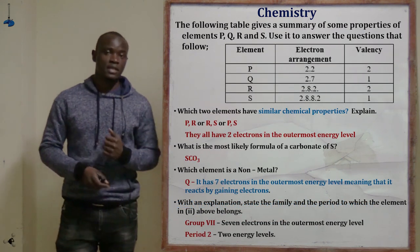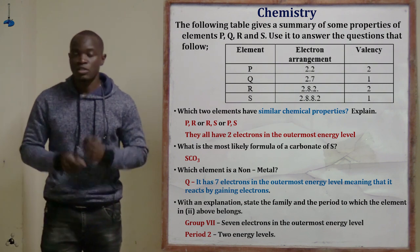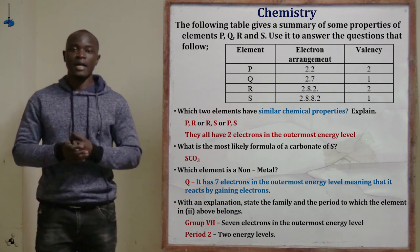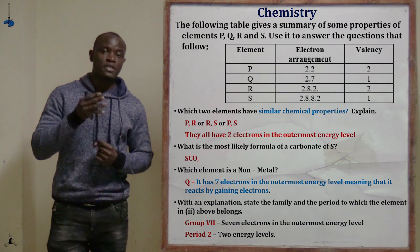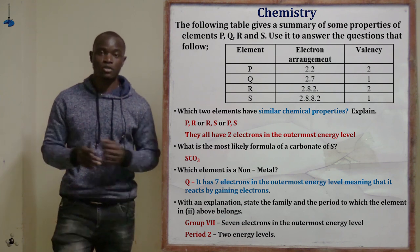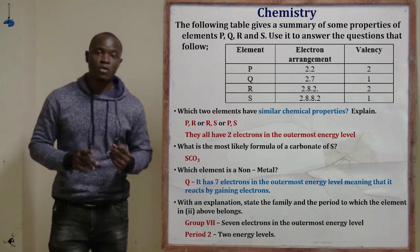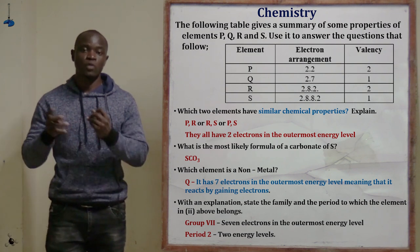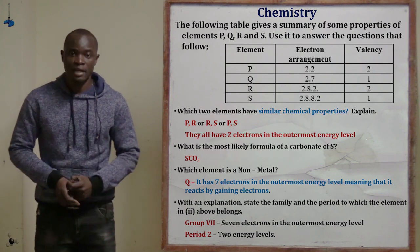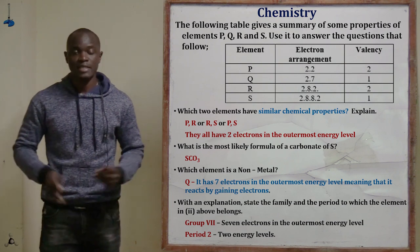Going back to the question asking for two elements with similar chemical properties — the answer is elements P, R, and S. These elements belong to the same group because they all have two electrons in the outermost energy level, which places them all in group number 2.